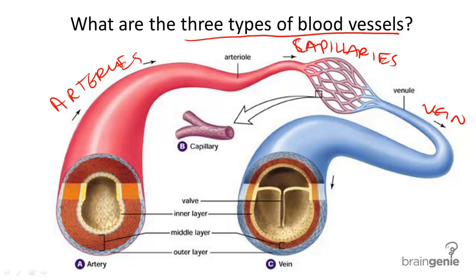Let's start with arteries. Arteries are the largest blood vessel. They have a thick outer layer made of connective tissue. They are also made of smooth muscle and endothelial tissue.